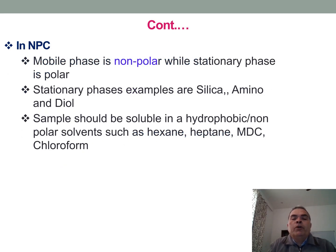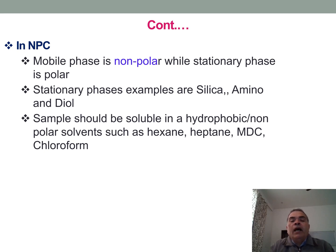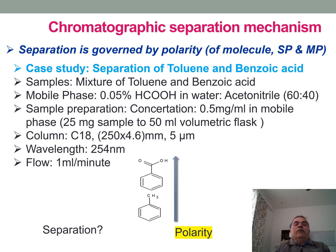In normal phase chromatography (NPC), the mobile phase is non-polar — such as hexane, heptane, or MDC — and the stationary phase is polar, such as silica, amino, or diol. For analysis in normal phase mode, the sample should be soluble in a non-polar solvent.